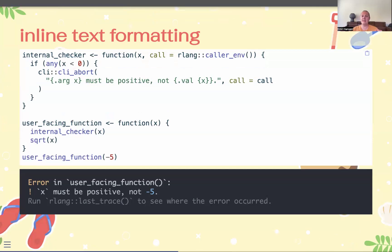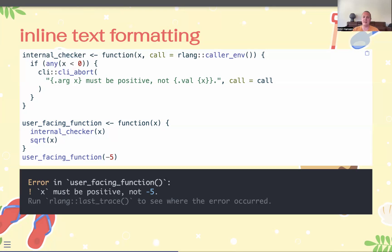The last nicety from CLI is inline text formatting. We already have the curly brackets, but if we add class names like .arg or .val — there are a lot of different ones you can find in the documentation — we can denote that x is an argument and the interpolated value is a value. This gives you standardized, consistent styling across everything about how to present different types of tokens in error messages.